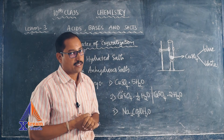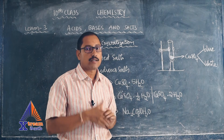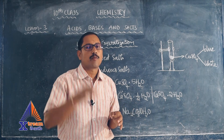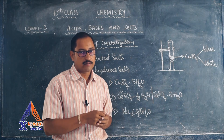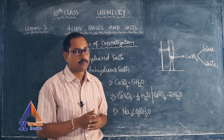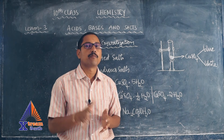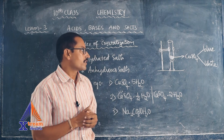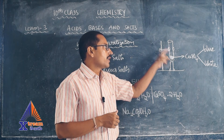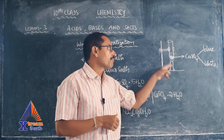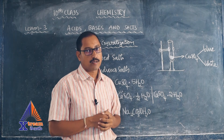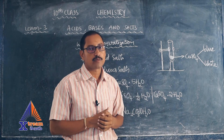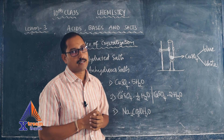There is a small activity to understand hydrated and anhydrous salts. Take copper sulfate available in your laboratory and put it in a test tube. It will generally be blue in color because at room temperature some water is present inside the crystal — that is nothing but water of crystallization. Now use a stand and a Bunsen burner to heat this test tube containing copper sulfate crystals.